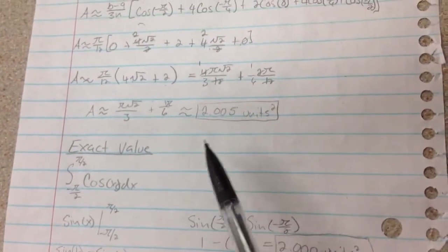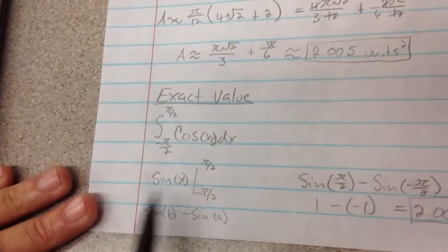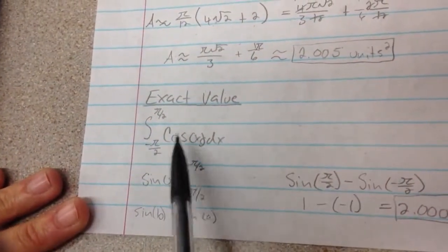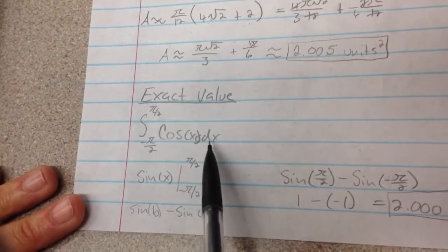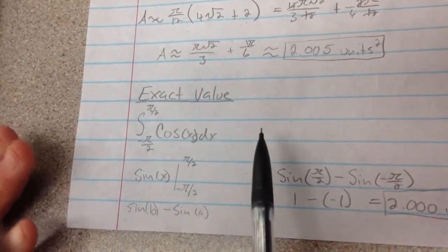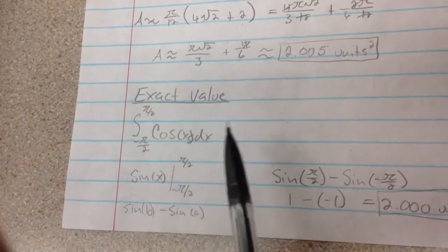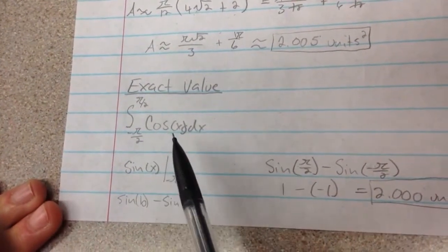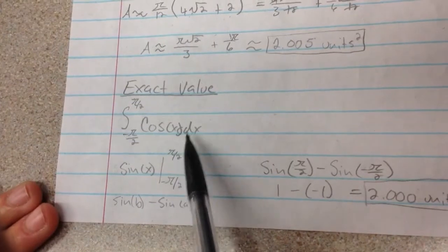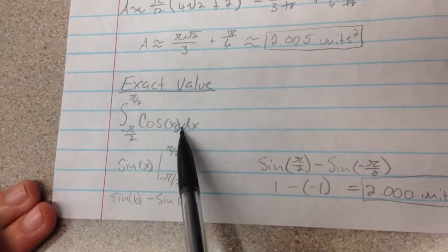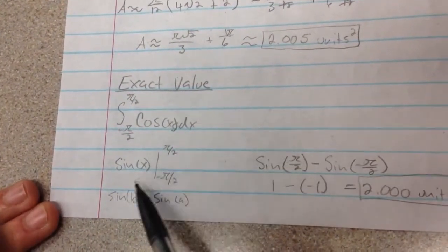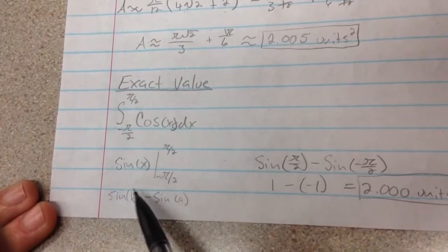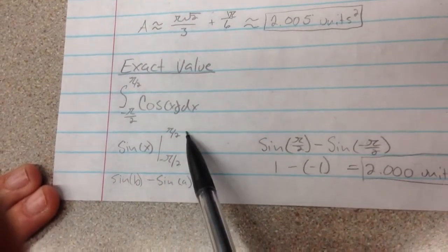Now we have to compare it to the exact value, which is just your basic integration. So you see that you have cosine of x dx. There's no u substitution or anything, because it's not necessary here. The antiderivative is going to be sine of x, because sine of x is the only thing that will give you cosine x.